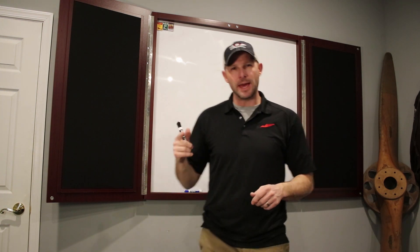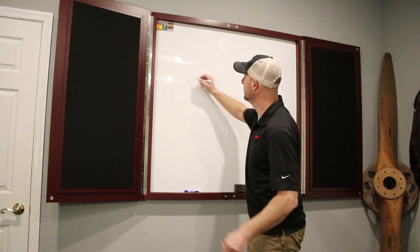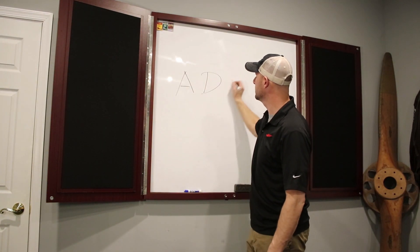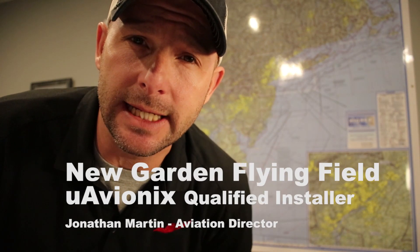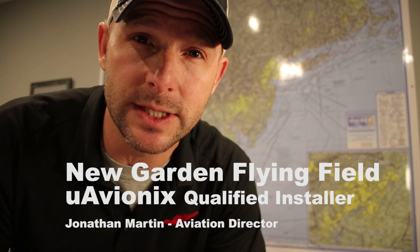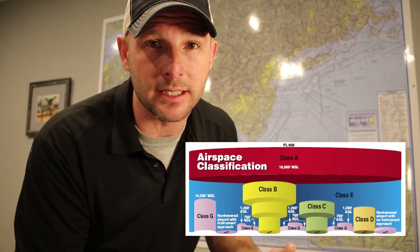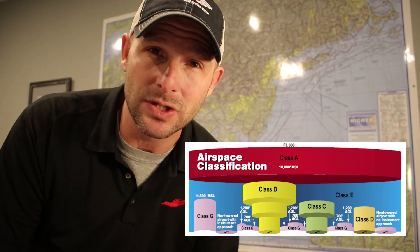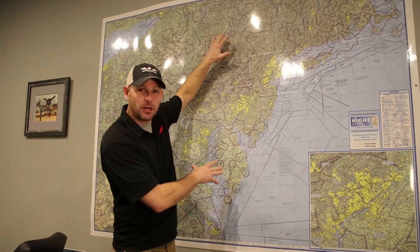Today is about Automatic Dependent Surveillance Broadcast — ADS-B. As of January 2, 2020, you are required to have an ADS-B out receiver if you fly within Class A airspace, within Class B airspace, or underlying Class B airspace within the Mode C veil, Class C airspace, or Class E airspace above 10,000 feet. So, looking at a lot of places on this chart, you're required to have ADS-B out technology.